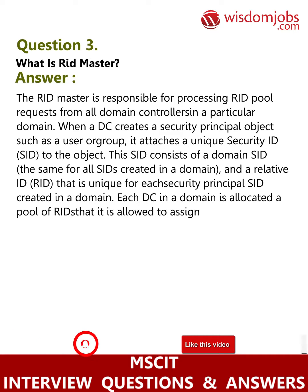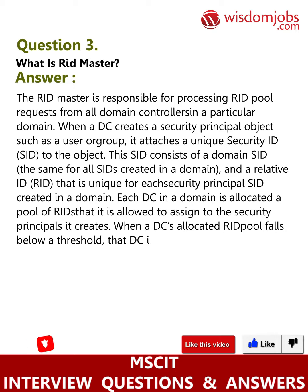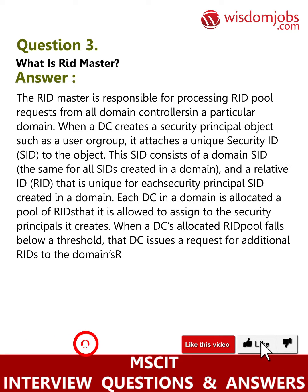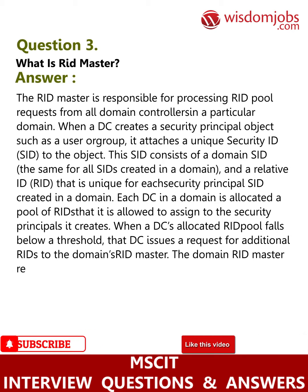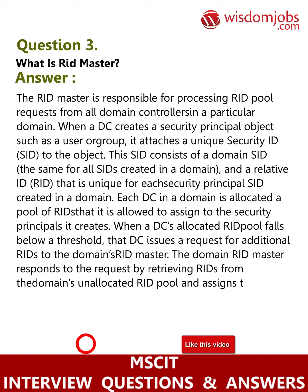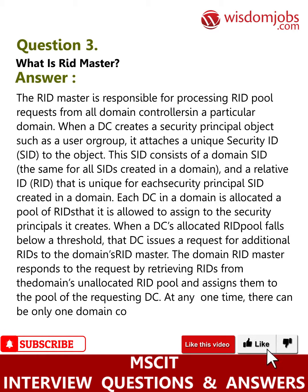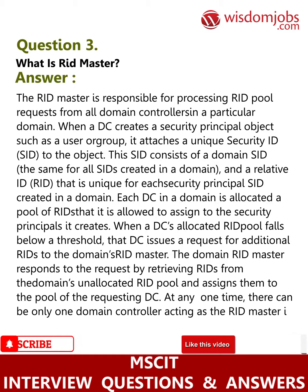When a DC's allocated RID pool falls below a threshold, that DC issues a request for additional RIDs to the domain's RID Master. The domain RID Master responds to the request by retrieving RIDs from the domain's unallocated RID pool and assigns them to the pool of the requesting DC. At any one time, there can be only one domain controller acting as the RID Master in the domain.